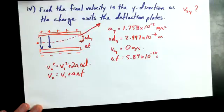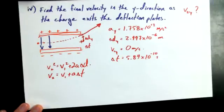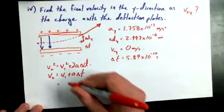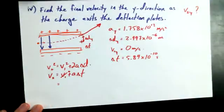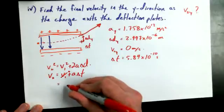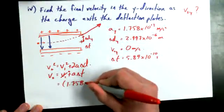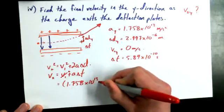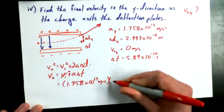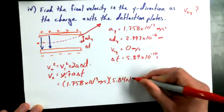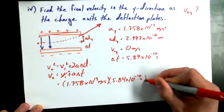V1, we said, is equal to zero. So that simplifies that term out almost immediately. We know that the acceleration is 1.758 times 10 to the 13 meters per second. We know delta T is 5.84 times 10 to the negative 10 seconds. And Martha, you have the answer? No, I have the answer. 10,266.72.